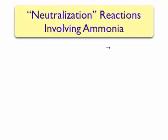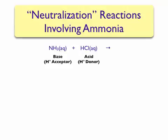Another type of neutralization reaction involves ammonia. If we react ammonia with hydrochloric acid, we can use Bronsted-Lowry theory to predict the product. We know that ammonia is a weak base and should accept a proton from an acid — in this case, hydrochloric acid. When ammonia accepts a proton it becomes the ammonium ion, NH4+. NH4+ combines with the chloride ion from hydrochloric acid to produce the salt ammonium chloride, which is a strong electrolyte according to our solubility rules. Water is not formed in a neutralization reaction that involves ammonia.